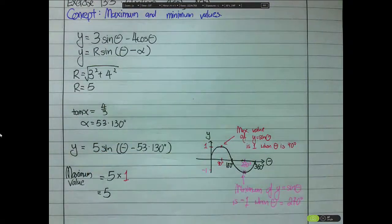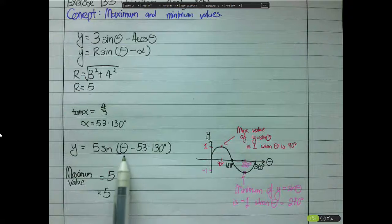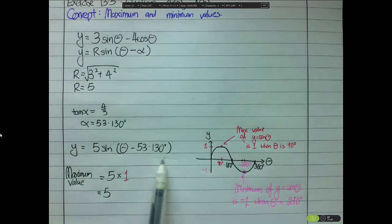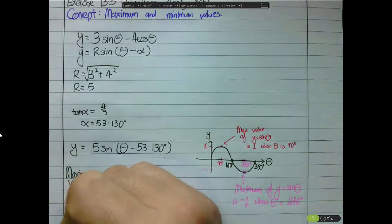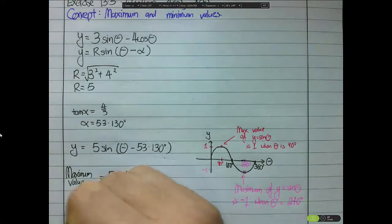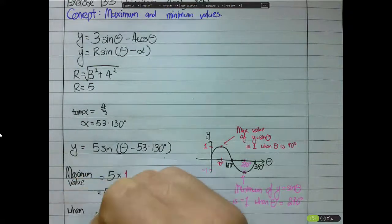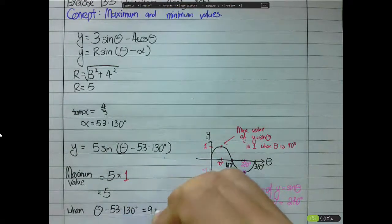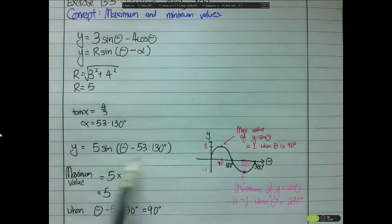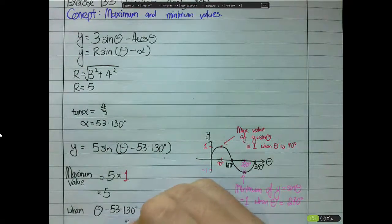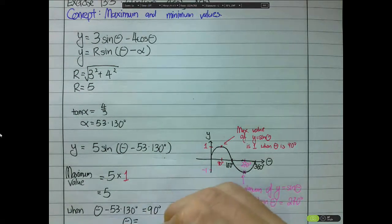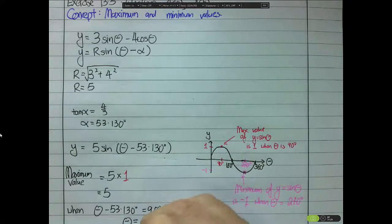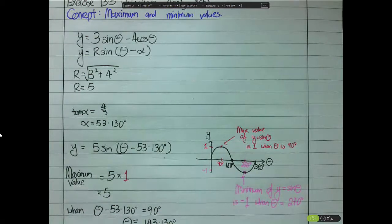This maximum occurs when the angle equals 90°, so θ - 53.130° = 90°. Solving, θ = 143.130°, which expressed to 1 decimal place is 143.1°.